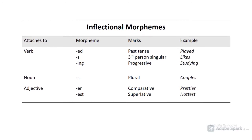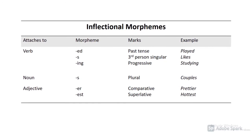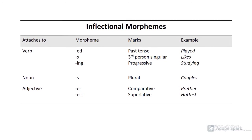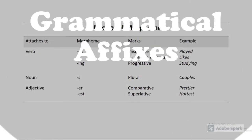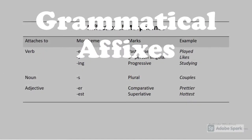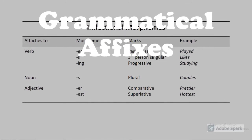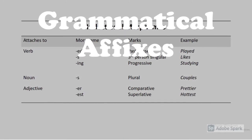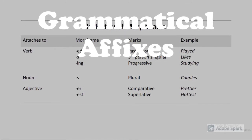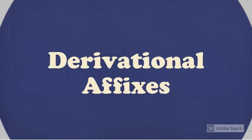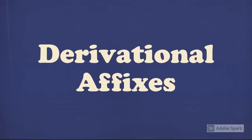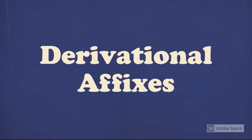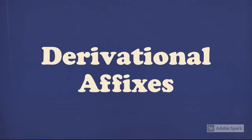Inflectional morphemes are bound morphemes which attach to the end of words. These are called grammatical affixes, and they do not change the category or the meaning of the word they attach to. The next category of affixes is where it really gets interesting — with derivational affixes.